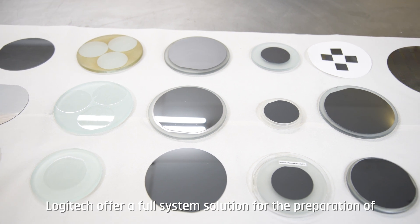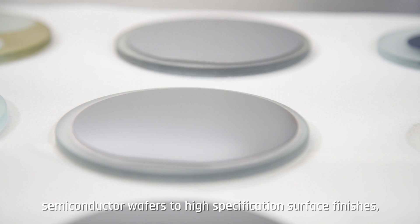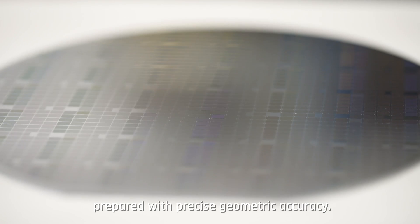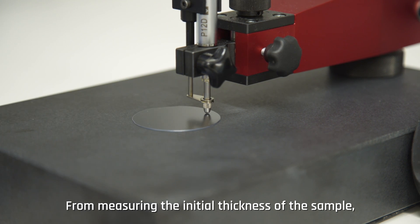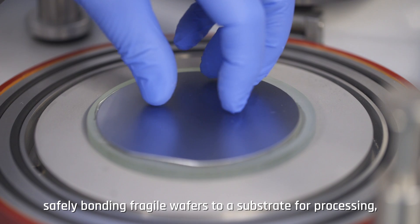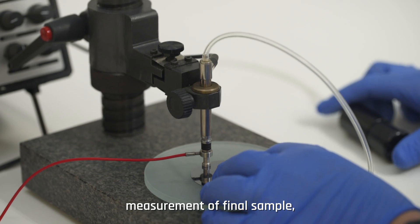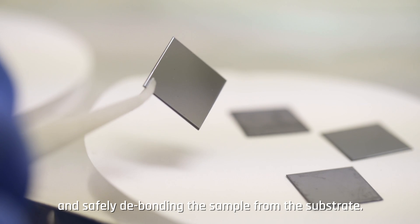Logitech offers a full system solution for the preparation of semiconductor wafers to high specification surface finishes prepared with precise geometric accuracy, from measuring the initial thickness of the sample, safely bonding fragile wafers to a substrate for processing, lapping, polishing, measurement of final sample, and safely debonding the sample from the substrate.